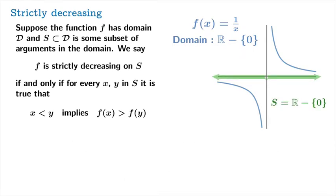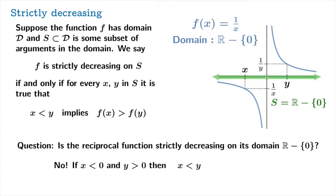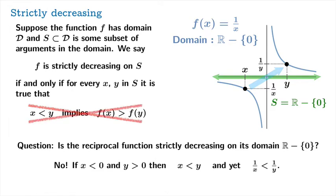Now, this might be surprising — let's let s be the whole domain, the union of the two intervals we were just looking at. The question is: is the reciprocal function strictly decreasing on its domain? The answer is no. All you need to do is notice that if you choose x to be less than 0 and y to be greater than 0, you'd have x less than y, but 1 over x is also less than 1 over y. We found a location where moving left to right in s causes the function value to go up, which is not consistent with the definition. So we're not allowed to say this is strictly decreasing on the domain.